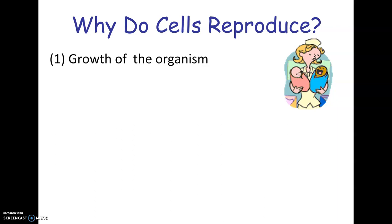Our next unit is about cell reproduction and genetics. We're going to start by talking about cell reproduction — different types of cell reproduction and why they occur, how they occur, the results of each, etc.